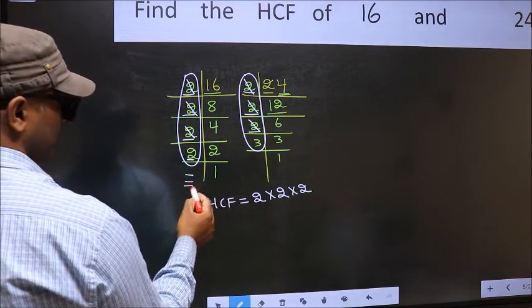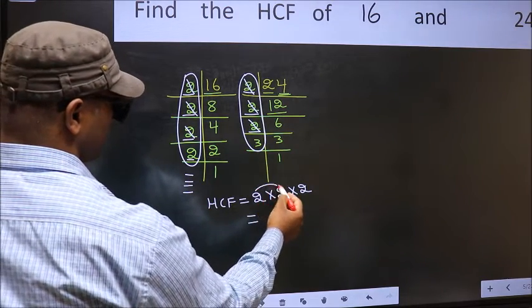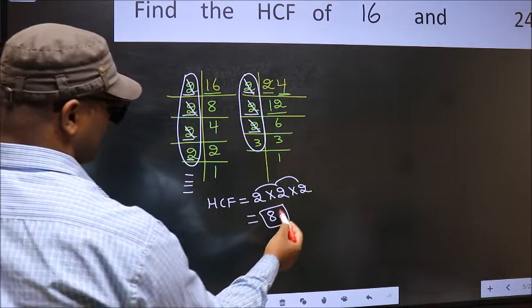No more numbers have been left out. So our HCF is 2 times 2 equals 4, times 2 equals 8 is our HCF.